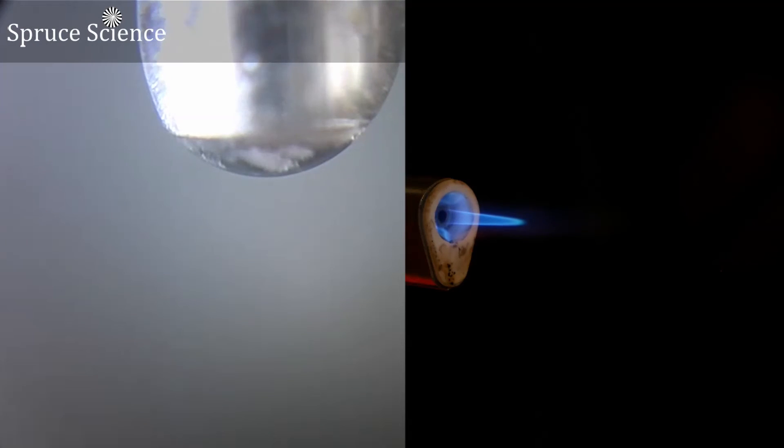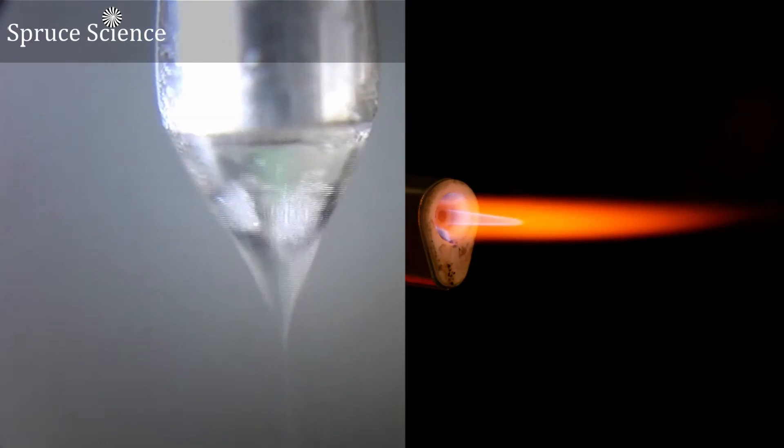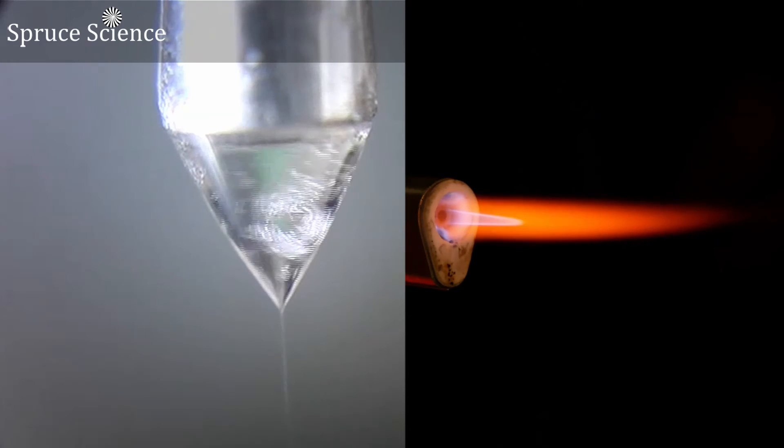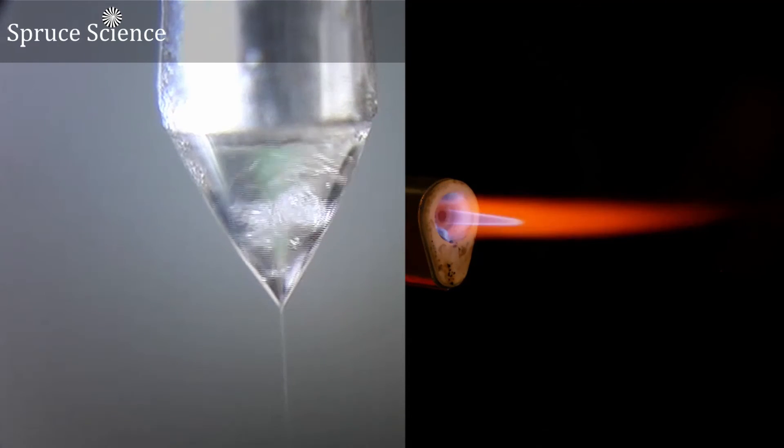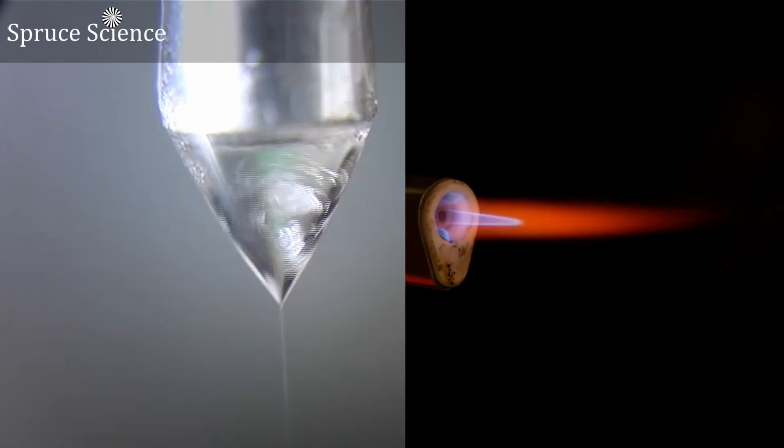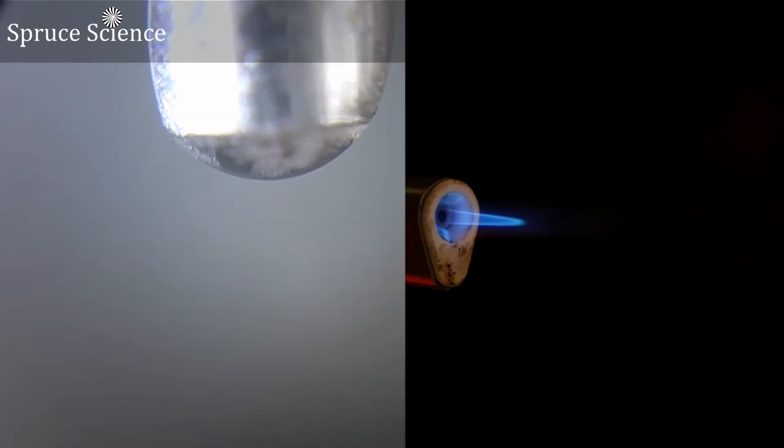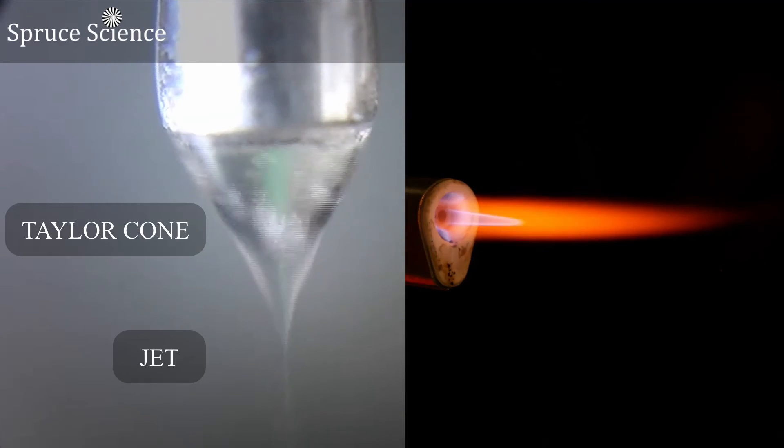What if we zoom in on the tip of the needle and take a closer look at all the action? When high voltage is applied from the needle, which is carrying the liquid flow, to the ground plate, we get this characteristic formation of what is known as a Taylor cone.